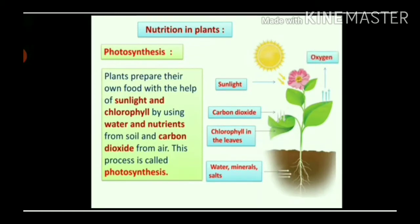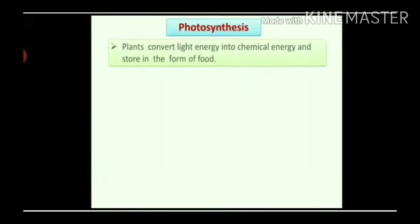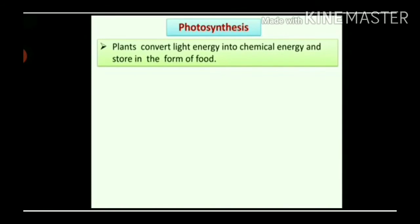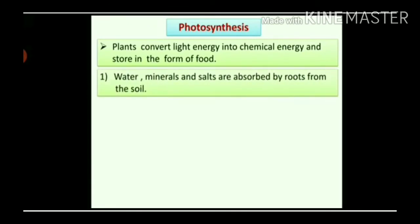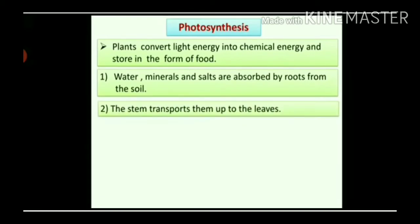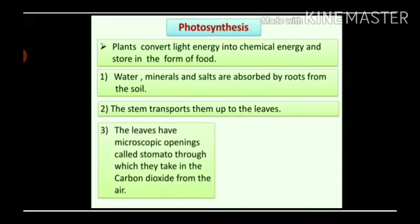In the process of photosynthesis, plants give out oxygen gas which mixes in the air. Plants convert light energy into chemical energy and store it in the form of food. Water, minerals and salts are absorbed by roots from the soil. The stem transports water, minerals and salts from the roots up to the leaves, because the photosynthesis process takes place in leaves. The leaves have microscopic openings called stomata, through which they take in the carbon dioxide from the air.